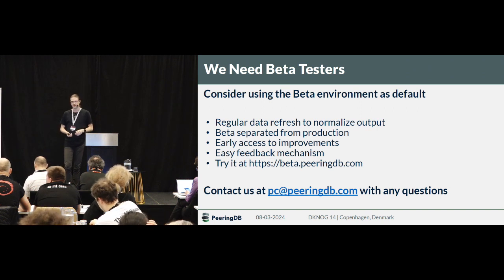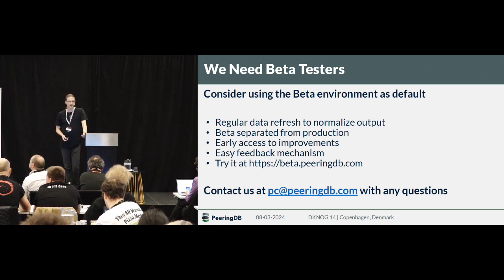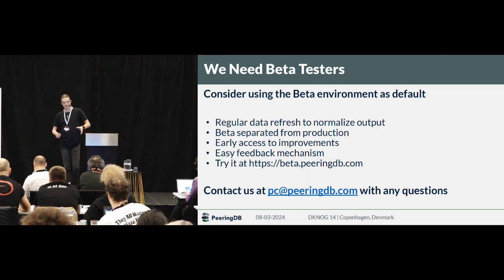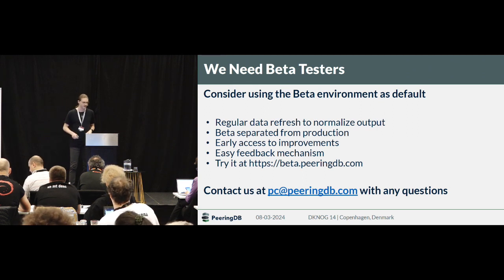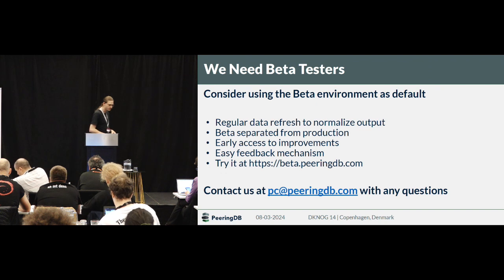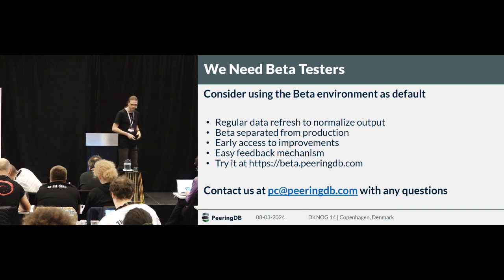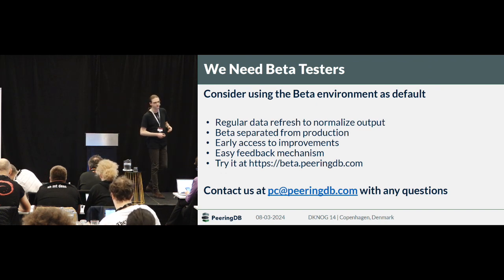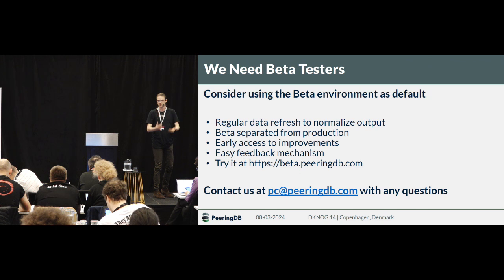We have a beta environment, but not a lot of people use it, which caused a big backlash for the UI changes we made recently. GitHub was flooded, people sent back-channel reports — it was essentially a nightmare, which is why it was rolled back. So now we are trying to improve that situation by encouraging people to use the beta.